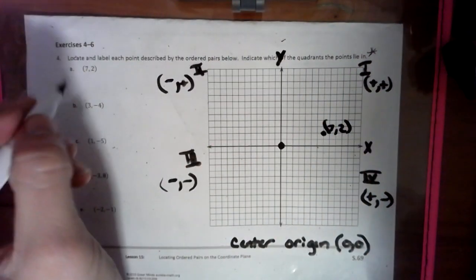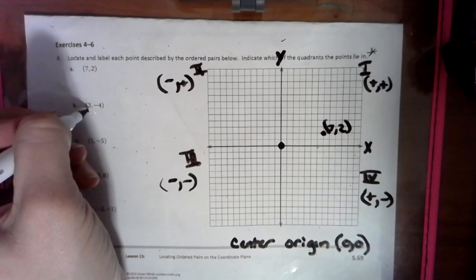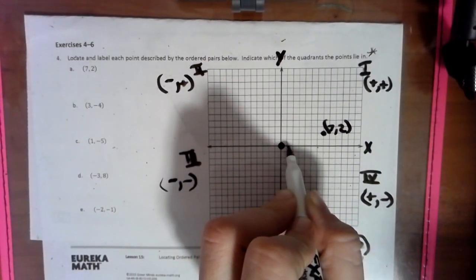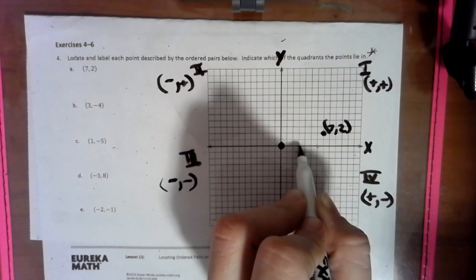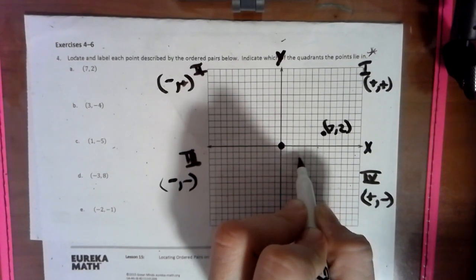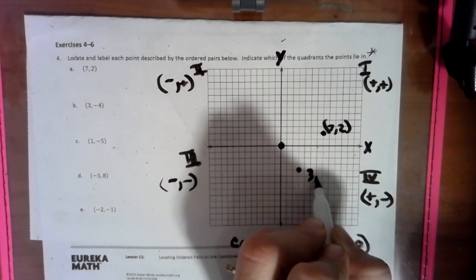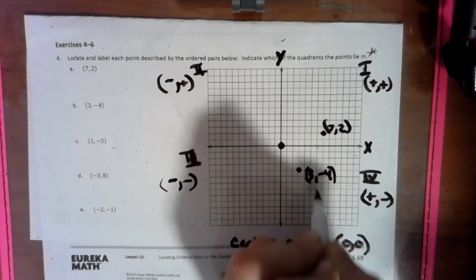And now we have 3, negative 4. So we go over to the positive 3, 1, 2, 3. And negative means down, 1, 2, 3, 4. And that's over to the positive 3, down 4 for the 3, negative 4 point.